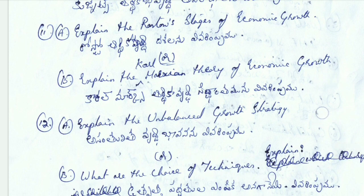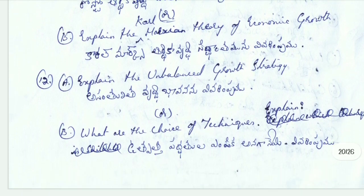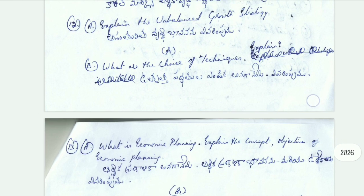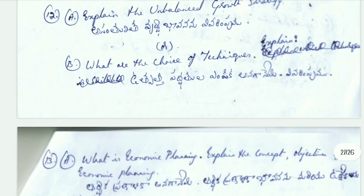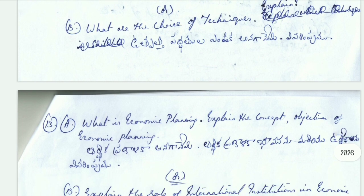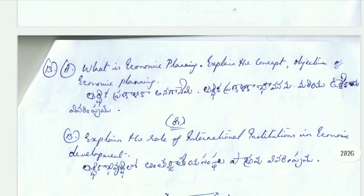B: what are the choice of techniques, explain. 13th Aayug: explain the concept and objectives of economic planning. B: explain the role of international institutions in economic development.